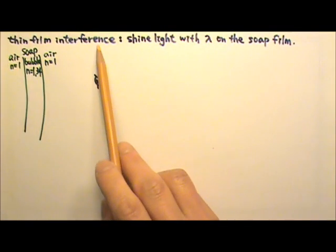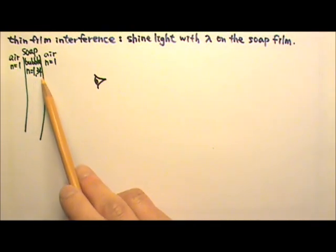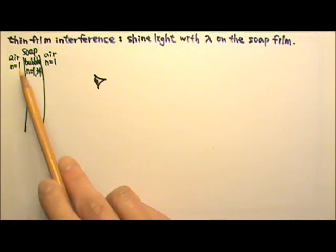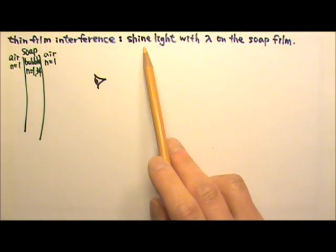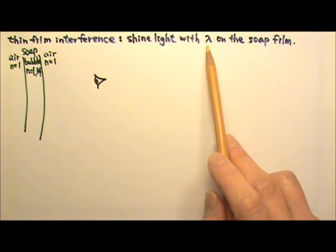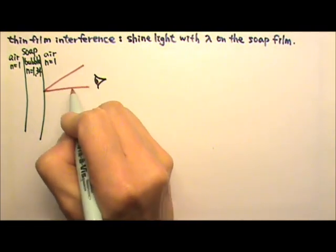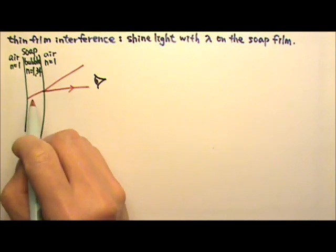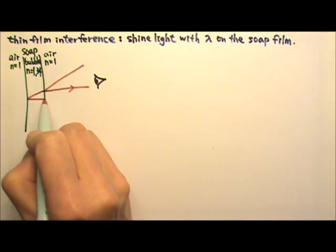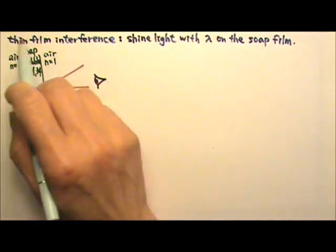Now let's review thin film interference. Let's say we have a soap bubble with N equals 1.34. On both sides of the soap bubble, we have air, N equals 1. The light shown on the soap film has a wavelength lambda. The reason we have thin film interference is because light rays reflect off the first surface, then enter the second surface and get reflected again. These two reflected rays can interfere to give us thin film interference.